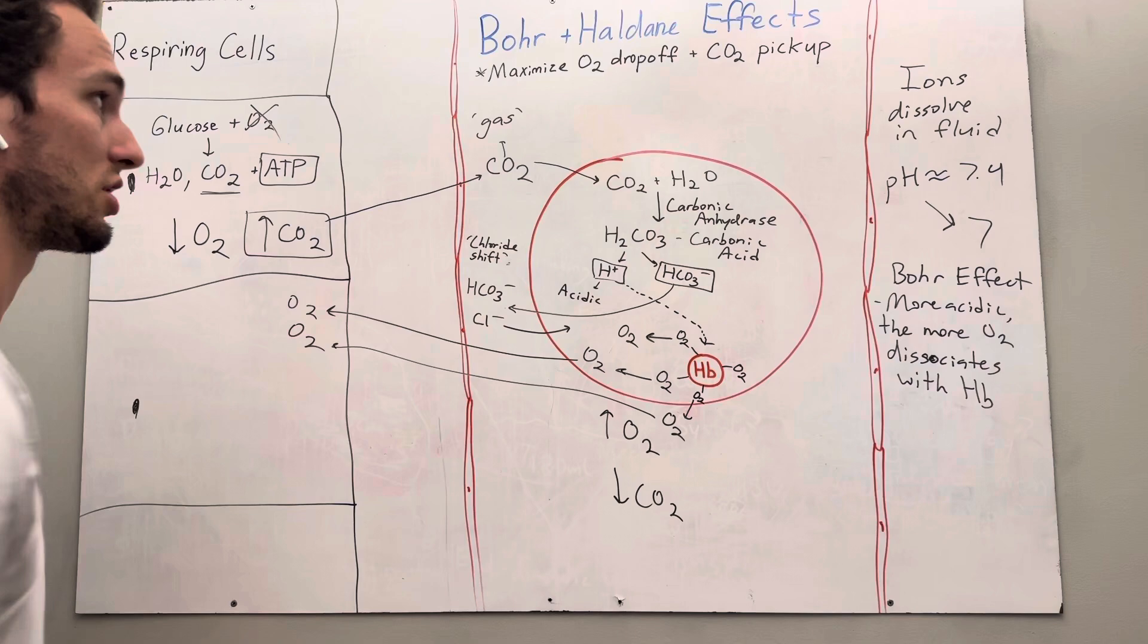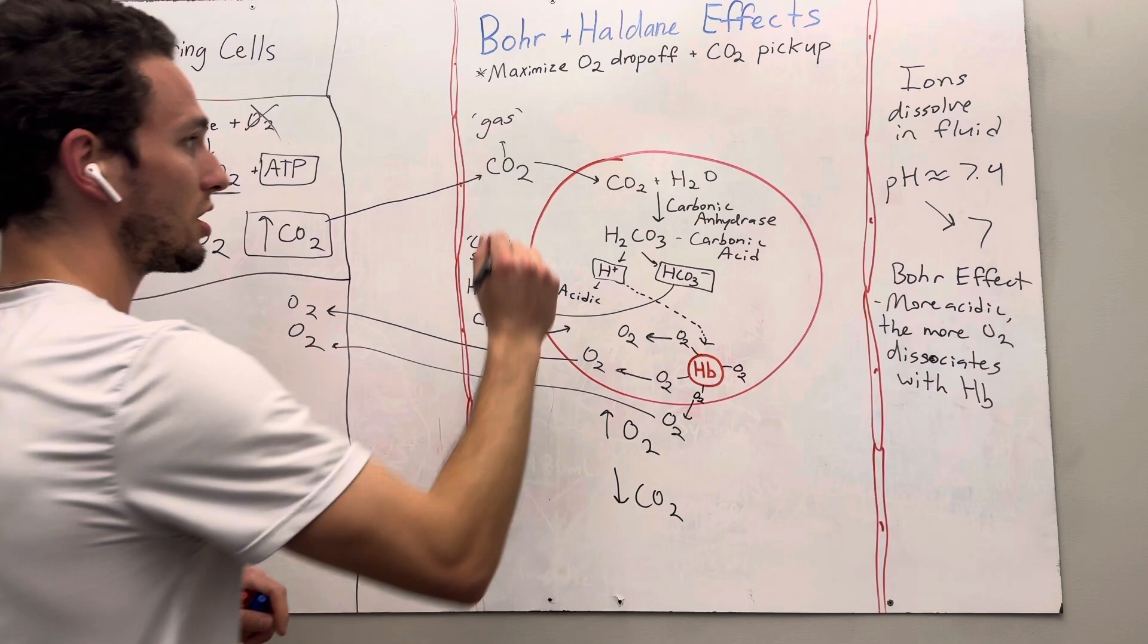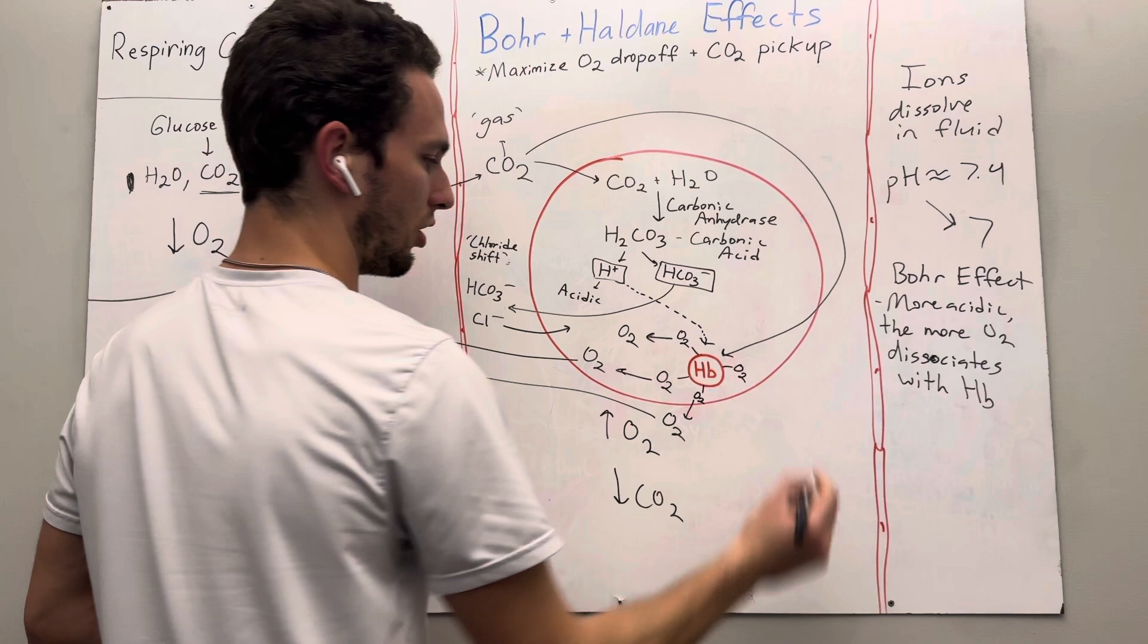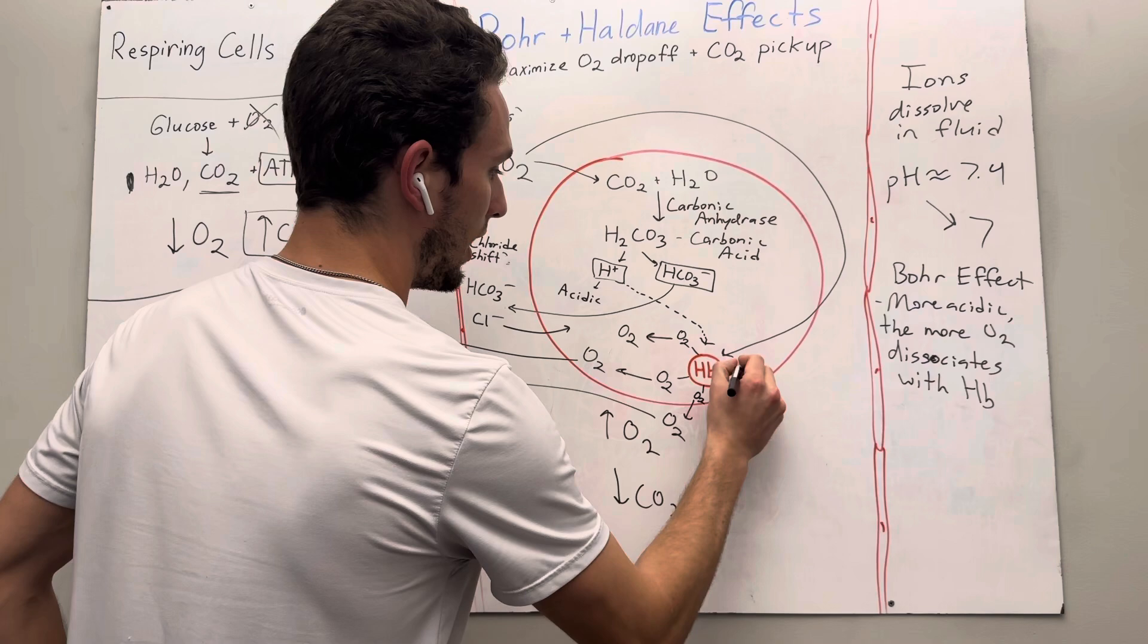But what I want to focus on is the Haldane effects. We talked about the Bohr effect, the more acidic, the more oxygen is getting kicked off, which feeds the tissues. This carbon dioxide can also come and directly bind to hemoglobin. So instead of oxygen binding to it, instead, we're going to actually make it carbon dioxide now binding to the hemoglobin.